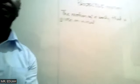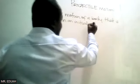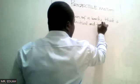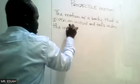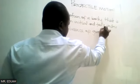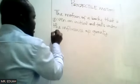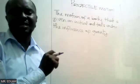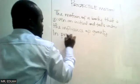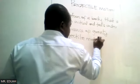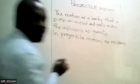So the motion of a body that is given an initial velocity and falls under the influence of gravity. In projectile motion, we assume that air resistance is neglected - same as what we witness when a body is free falling.